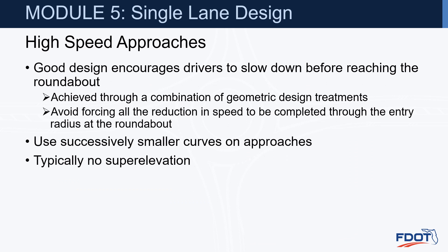Good design encourages drivers to slow down before reaching the roundabout, achieved through a combination of geometric design treatments. We want to avoid forcing all the speed reduction to be completed through the entry radius at the roundabout — we want things happening in advance. Use successively smaller curves on the approaches and tangents between them, and typically no superelevation.